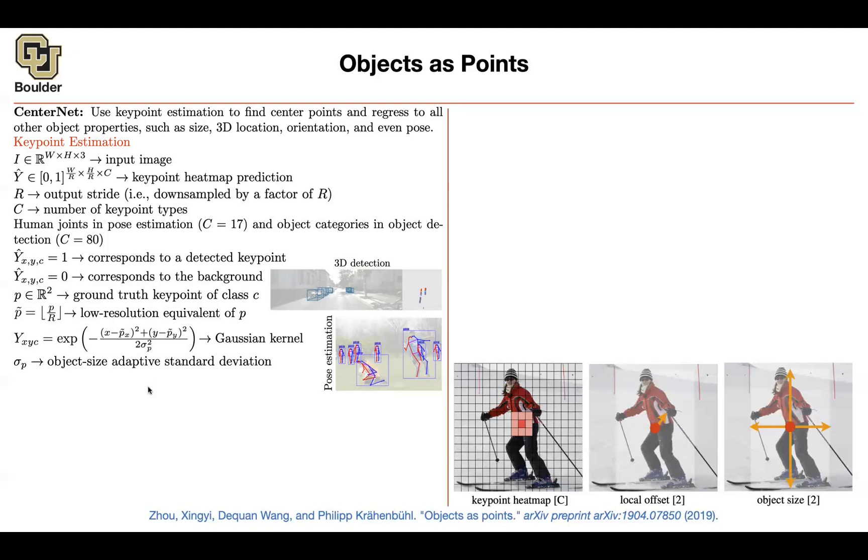And depending on... Sigma is a hyperparameter. It's going to tell you how much are you smoothing? How relaxed are you? How strict are you? That's going to give you a ground truth heat map. And now you need to regress Y hat to Y.